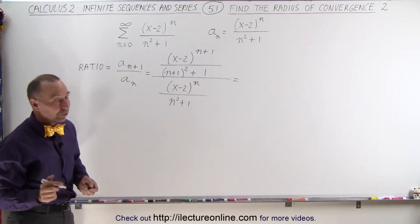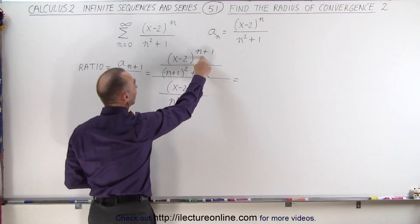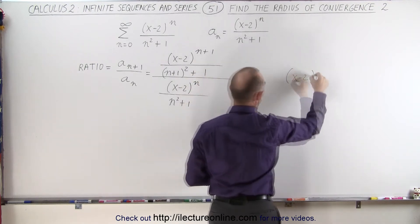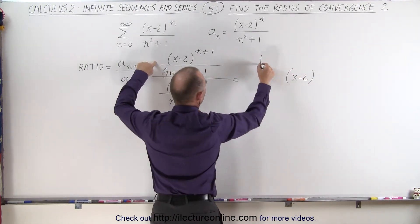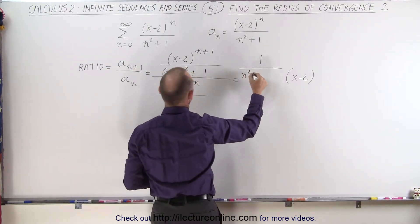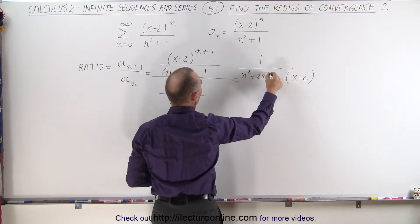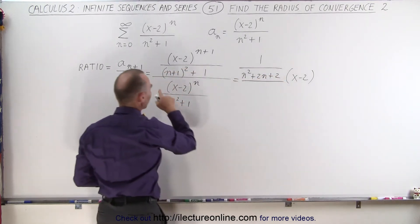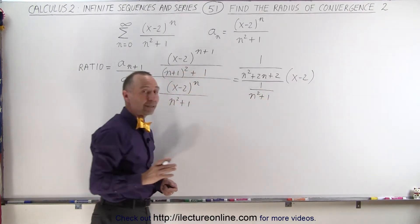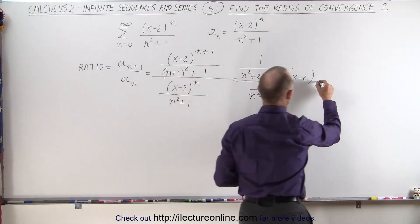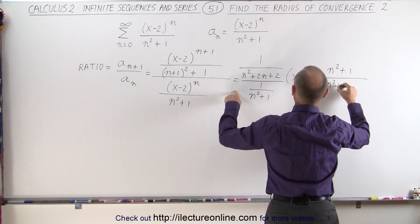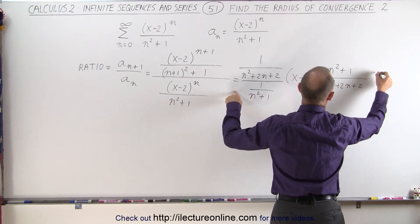Let's simplify that. x minus 2 to the n plus 1 divided by x minus 2 to the n is simply x minus 2. Now we have 1 over this quantity squared plus 1, which gives us n squared plus 2n plus 2 divided by, in the denominator we get 1 over n squared plus 1.